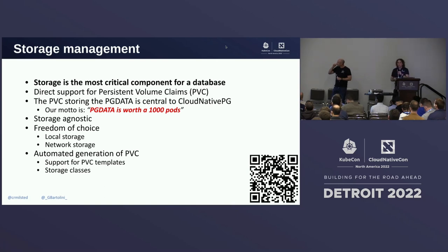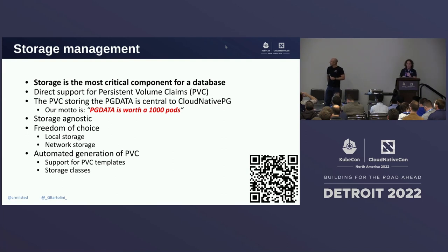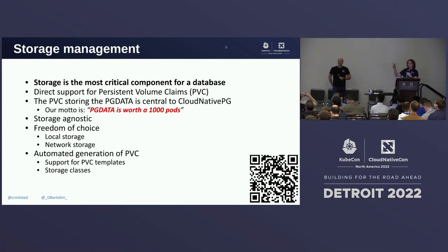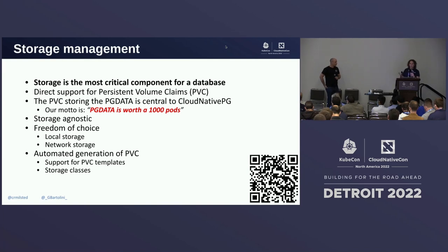Storage is the most critical component of a database — that's always been the case on bare metal, VMs, and Kubernetes as well. You must plan from day zero to run database workloads. Cloud Native PG doesn't make use of stateful sets; instead, we directly manage PVCs, which are the most important assets of a PostgreSQL database. We call it PG data. Our internal motto at Cloud Native PG is: PG data is worth 1,000 pods. We can't lose data — our primary directive is not to lose data.